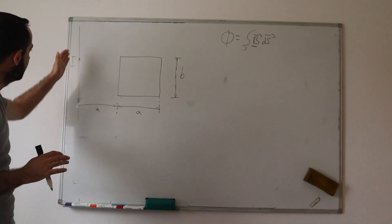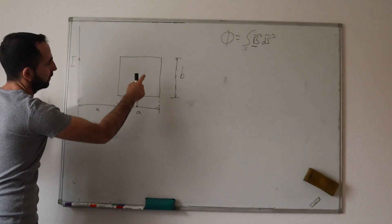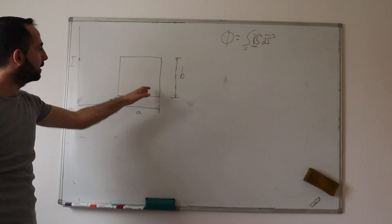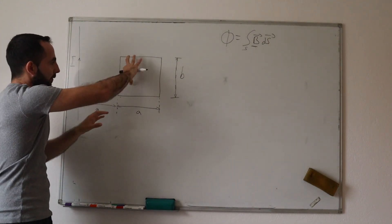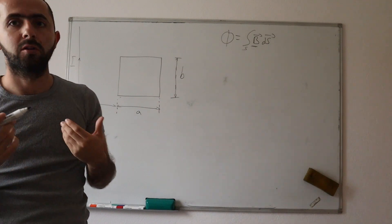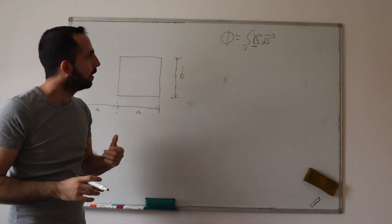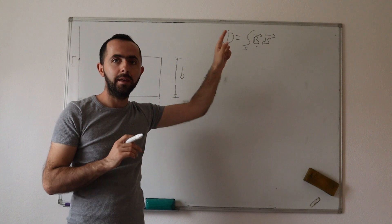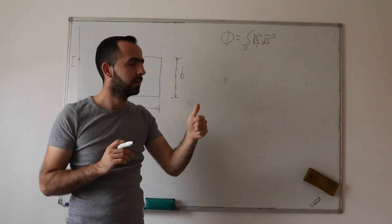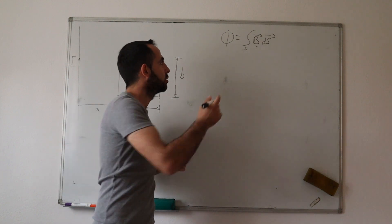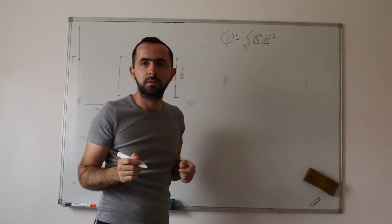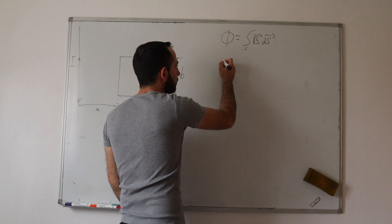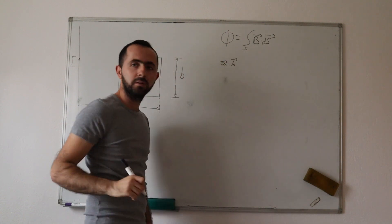For example, here we have our problem: this conductor will create its magnetic field, and if we have this surface, the total magnetic field on this surface is actually our magnetic flux. We can see how it is calculated — it is an integral of B·dS, where B is a vector and dS is a vector. This means it is a dot product of two vectors, a scalar product. Because of that we need to remind ourselves what the dot product of two vectors is.